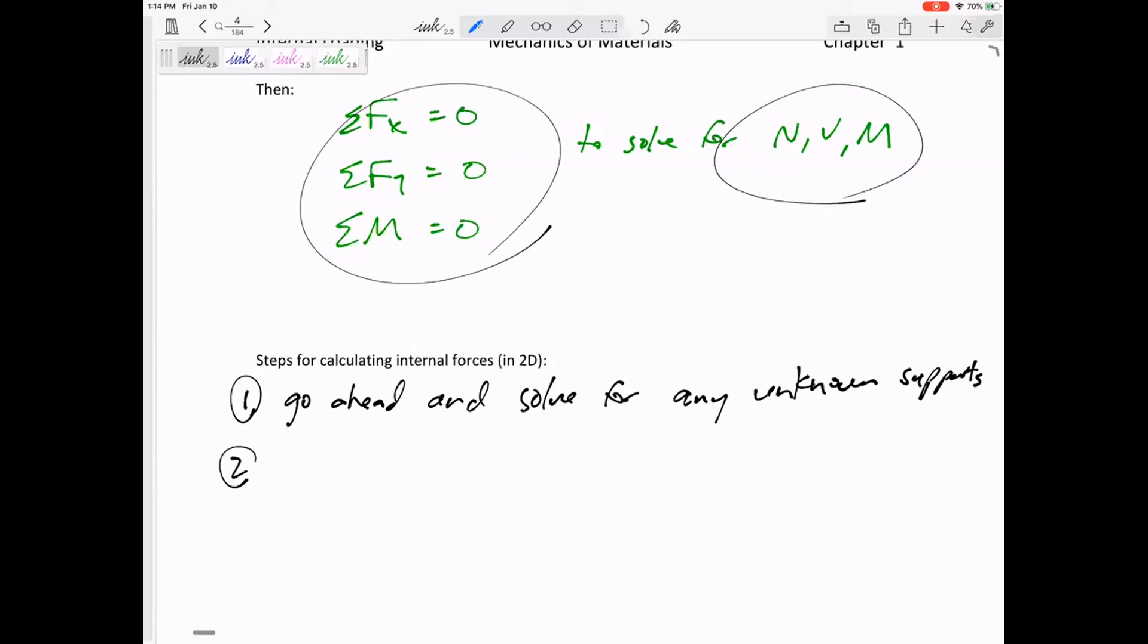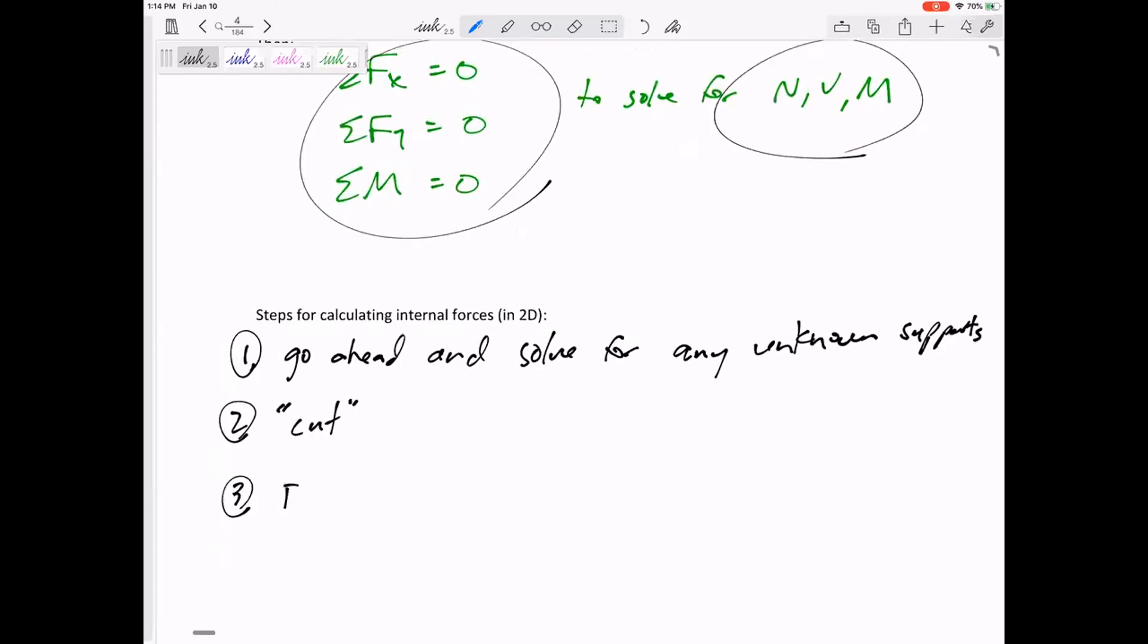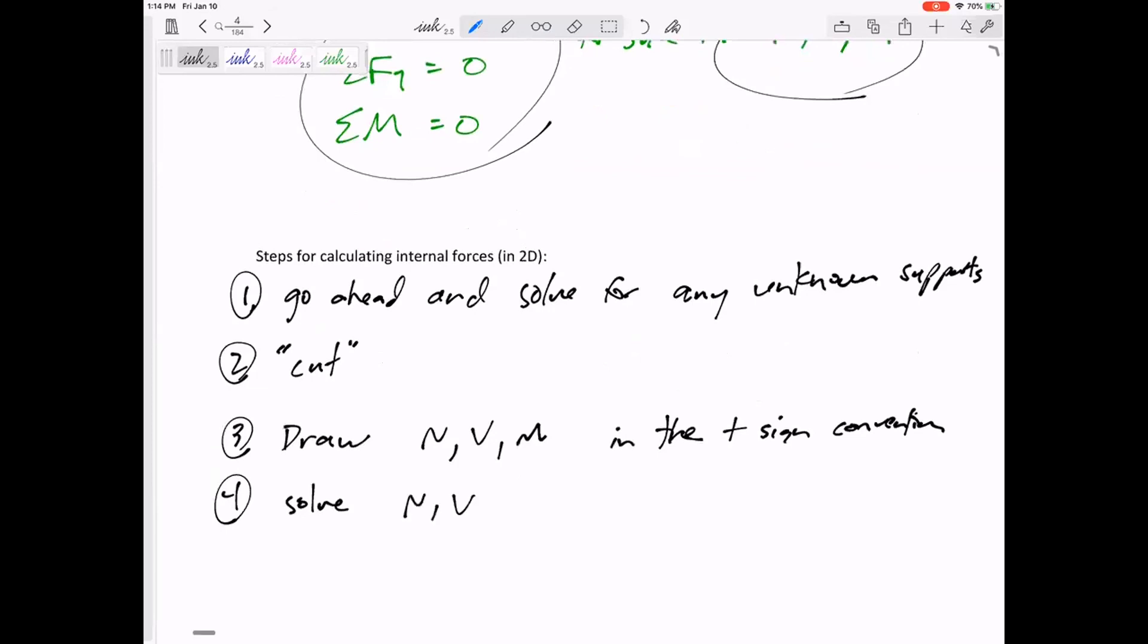So then what do you do? You cut the member, draw N, V, and M in the positive sign convention, and then solve for N, V, and M with your three equilibrium equations.